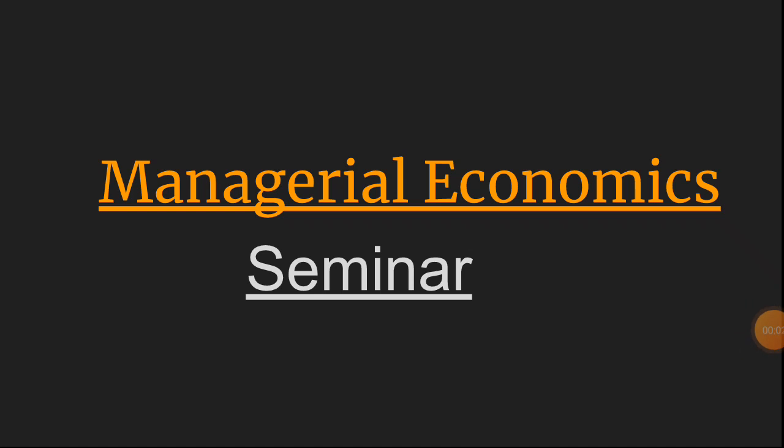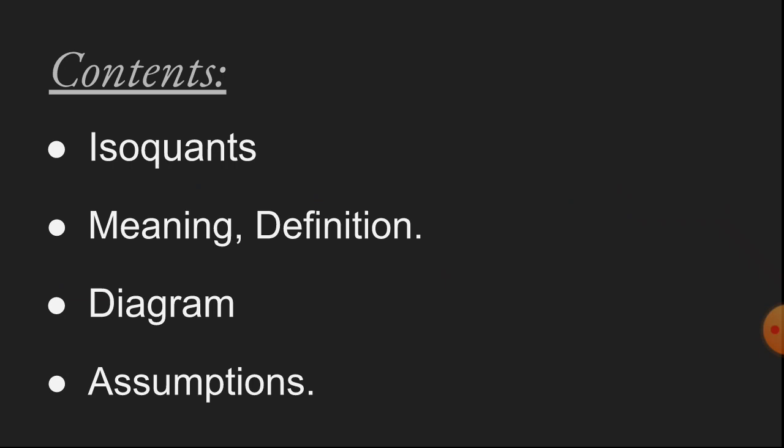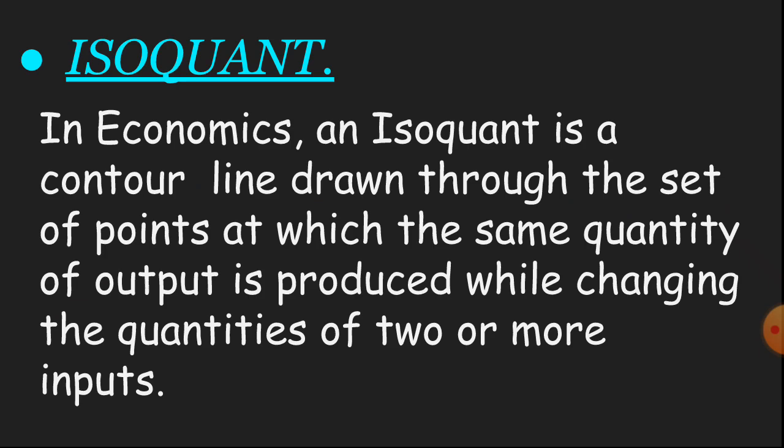Hi everyone, today I am discussing the topic isoquants and assumptions of isoquants. In economics, an isoquant is a contour line drawn through the set of points at which the same quantity of output is produced while changing the quantities of two or more inputs.